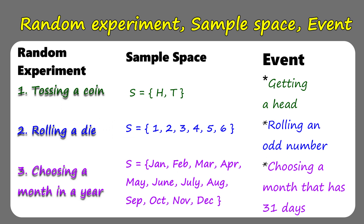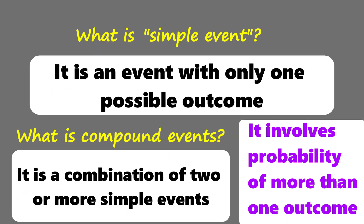Number three — choosing a month in a year. We have 12 months in a year, so in our sample space we have 12 elements, from January to December. An example of an event of this random experiment is choosing a month that has 31 days. You can also have choosing a month that has 30 days or 28 days. So now you have the idea — you can differentiate random experiment, sample space, and event.